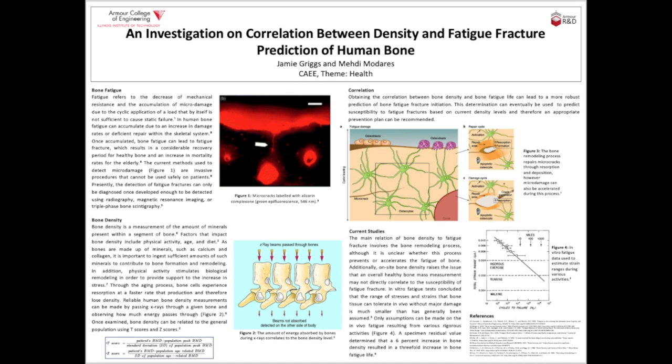Obtaining the correlation between bone density and bone fatigue life can lead to a more robust prediction of bone fatigue fracture initiation. This determination can eventually be used to predict susceptibility to fatigue fractures based on current density levels, and therefore an appropriate prevention plan can be recommended. The main concept in which bone density relates to fatigue fracture in vivo involves a bone remodeling process, although due to limitations on research it is unclear whether this process prevents or accelerates the fatigue of bone.